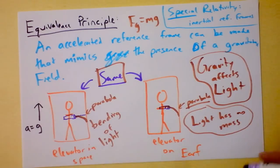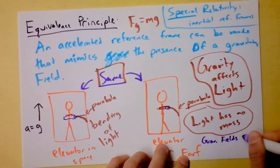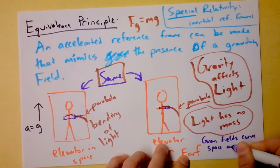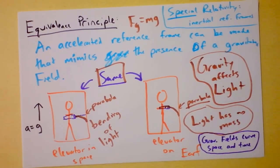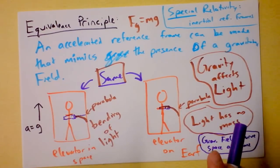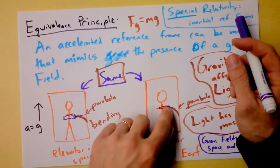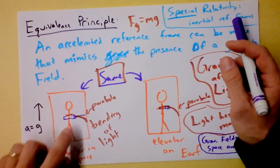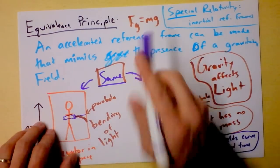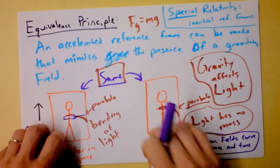You could say that gravitational fields curve space and time. That's what Einstein ultimately concludes. The presence of mass creates gravitational fields, and mass bends space and time itself, which causes light to bend — because light is just following a straight path through curved space. Space itself curves downward because of the presence of Earth, and light follows a curved path because it's in an accelerated reference frame. So we're left with the equivalence principle: an accelerated reference frame is exactly identical to a gravitational field.